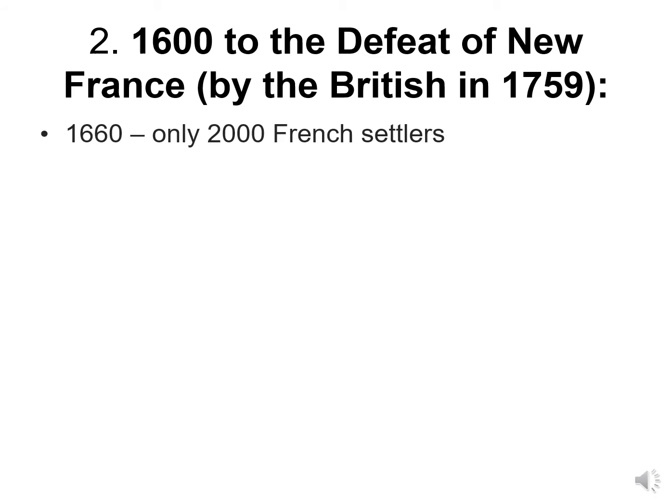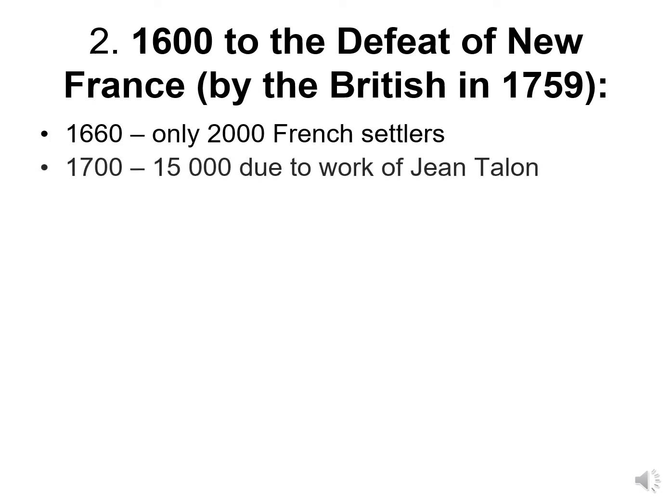The second period is 1600 to the defeat of New France in 1759. The French initially settled very slowly — by 1660 there were only 2,000 French settlers, but by 1700 there were 15,000. This was largely due to the work of Jean Talon, the first Intendant of New France, appointed by Louis XIV. He did a very good job of attracting people to New France and came up with various schemes, the most famous being the Filles du Roi.